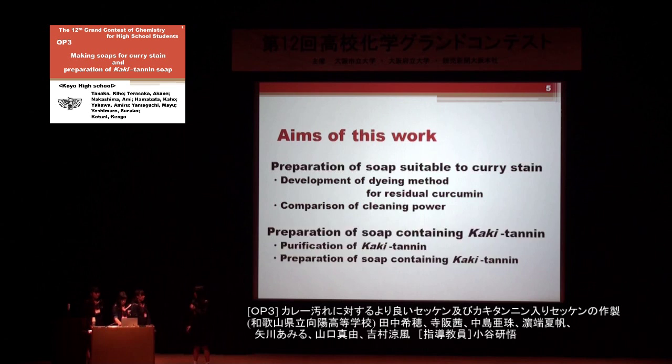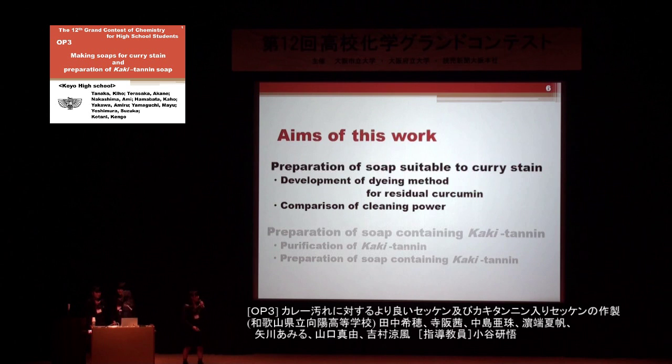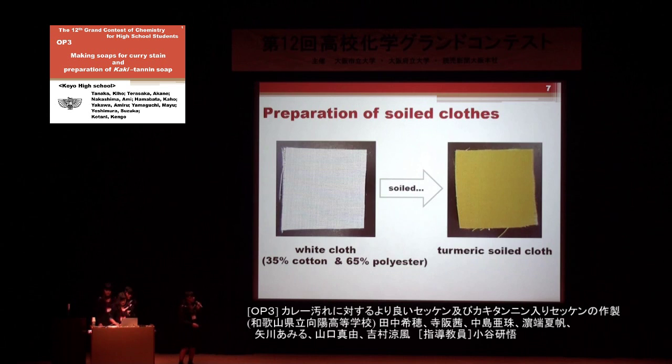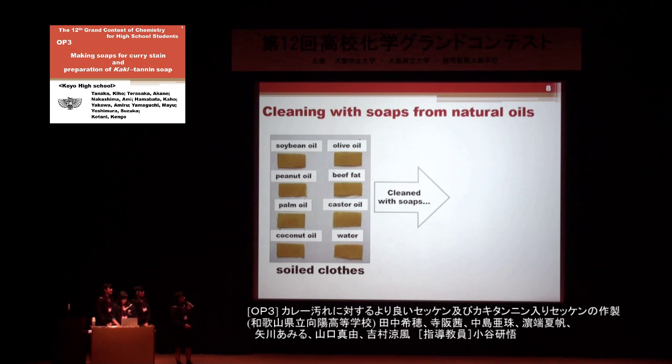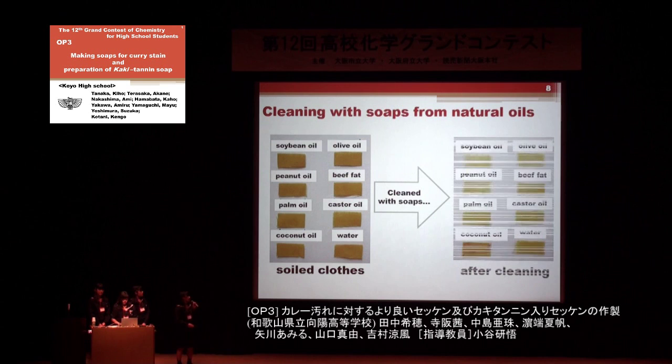First, we will talk about preparation of soap suitable for curry stain. Test solid cloths were composed of the same materials as our school uniform. The solid cloths were washed with seven kinds of soap made from natural oils. However, the evaluation of cleaning power just by visual observation was difficult because yellow stain on white cloth gave little contrast.